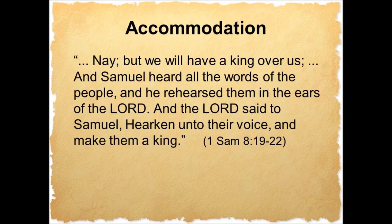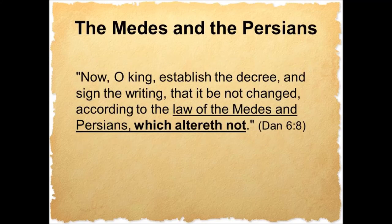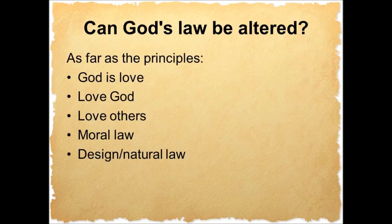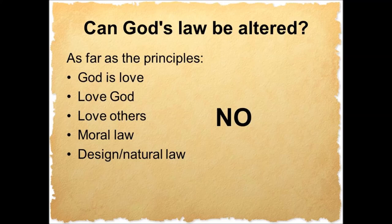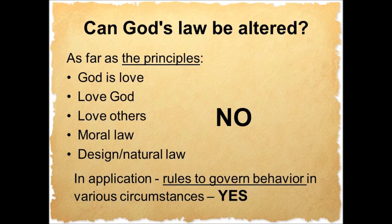The people did not entirely reject God; they just rejected God's role of reigning over them and directing their affairs by the prophets. So God granted them their wish. Is this God requiring strict obedience to the letter of the law? Or is he accommodating someone? We think sometimes of this verse from Daniel: 'the law of the Medes and Persians, which altereth not.' Is the law of God following the example of the Medes and Persians? As far as the principles — God is love, love God, love others, his moral law, design or natural law — can those be altered? No, the principles are unchangeable. But in application, rules to govern behavior in various circumstances? Yes. God added lots of laws as he saw we needed them. He altered his requirements. One example is Hebrews 7:12 — the law regarding eligibility for the priesthood: 'For the priesthood being changed, there is made of necessity a change also of the law.'